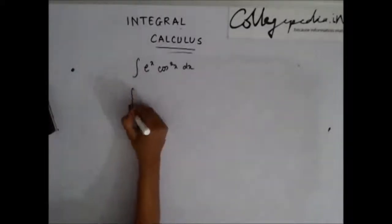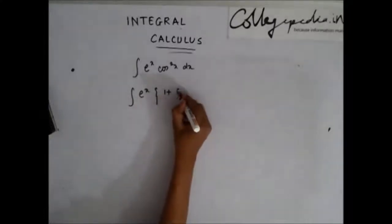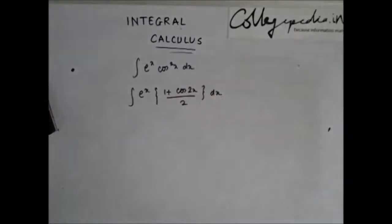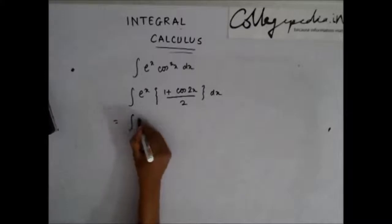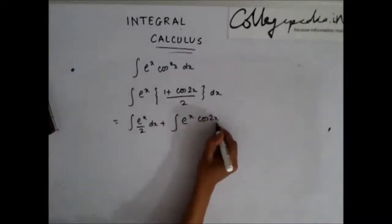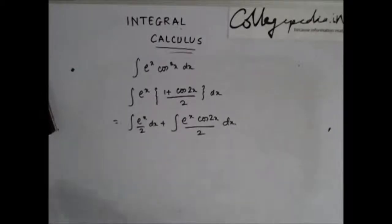Here you can see that I can write cos square x as 1 plus cos 2x over 2 dx. Now break this: we have e to the power x by 2 dx plus integration of e to the power x cos 2x dx. This becomes e to the power x by 2 plus c.